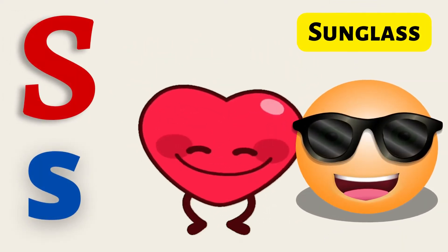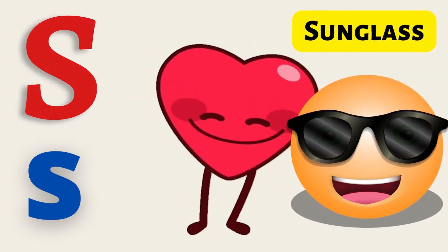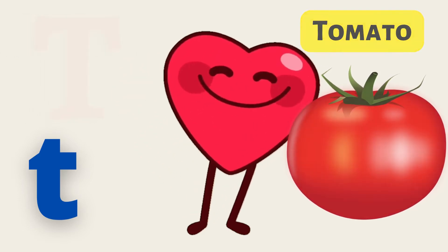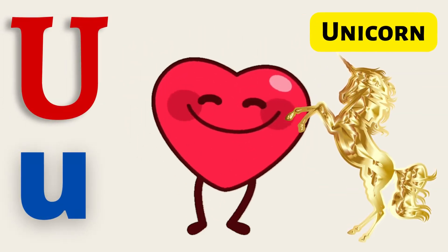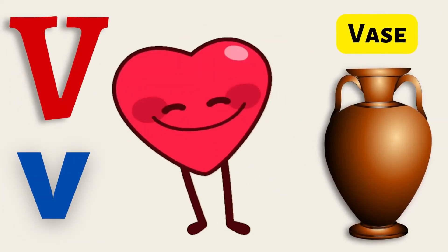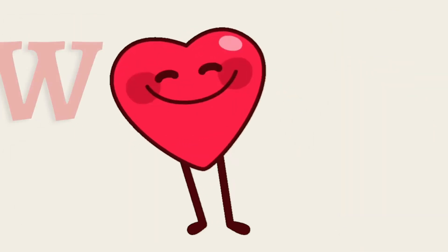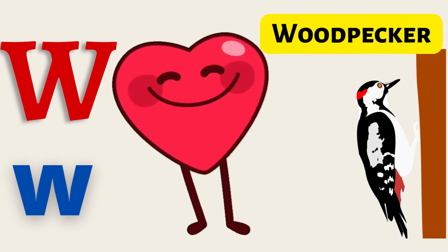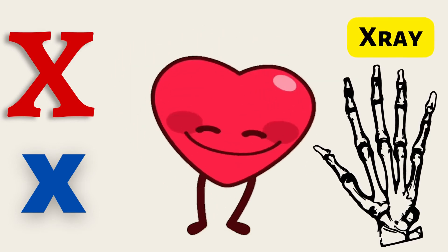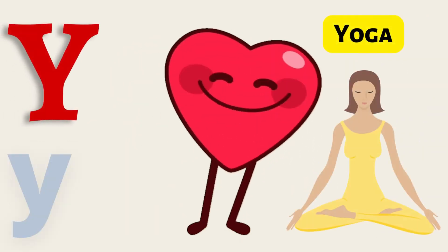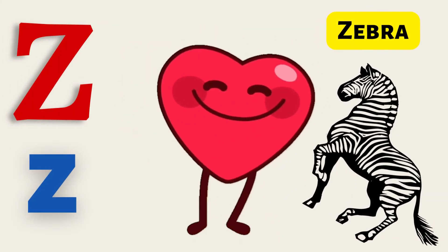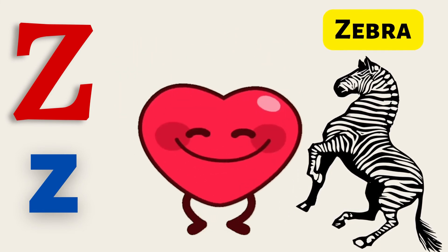S for Sunglass. T for Tomato. U for Unicorn. V for Vaas.